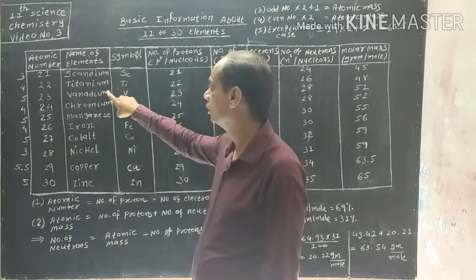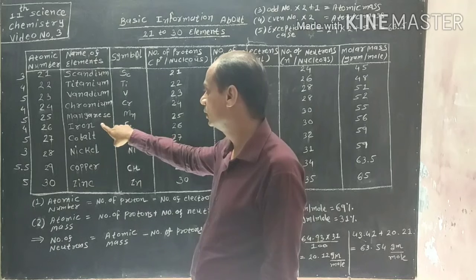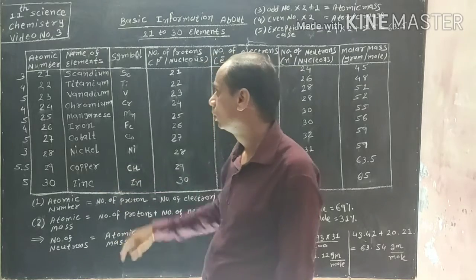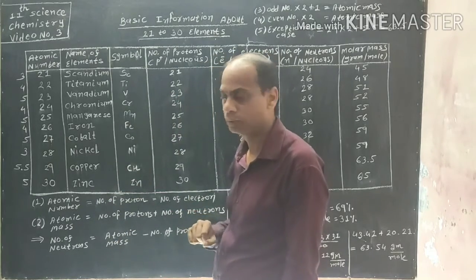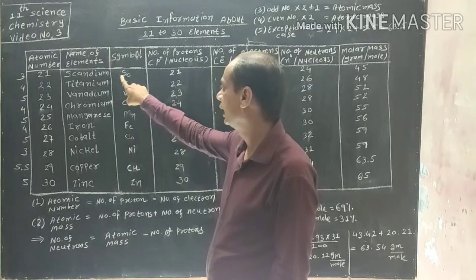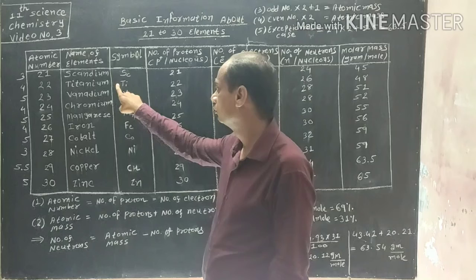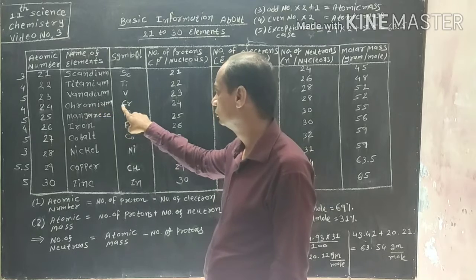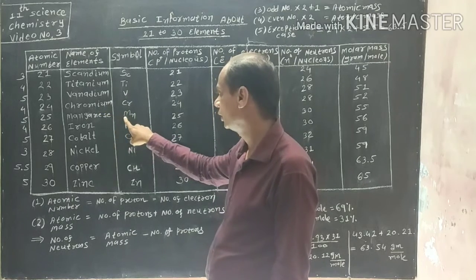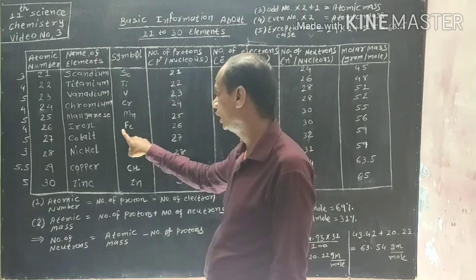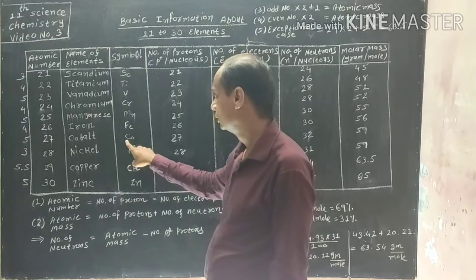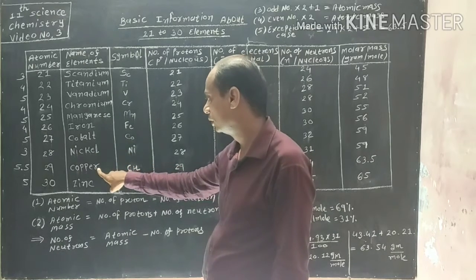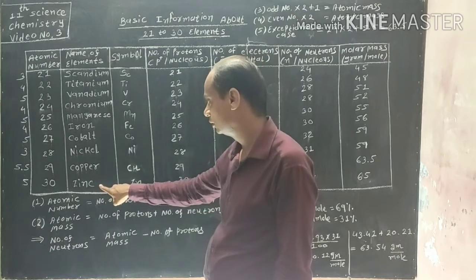Let's go through them one more time: Scandium, Titanium, Vanadium, Chromium, Manganese, Iron, Cobalt, Nickel, Copper, and Zinc. Column number three is about symbols. Scandium: Sc, Titanium: Ti, Vanadium: V, Chromium: Cr, Manganese: Mn, Iron: Fe, Cobalt: Co, Nickel: Ni, Copper: Cu, Zinc: Zn.